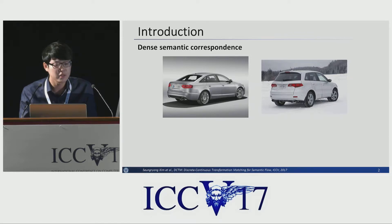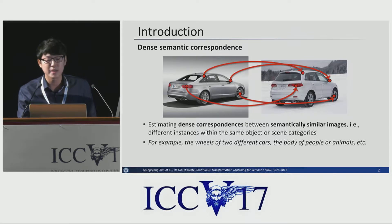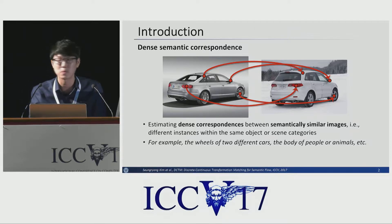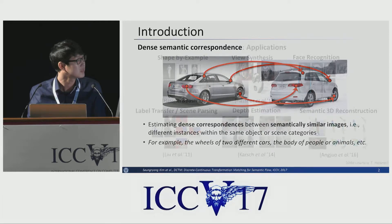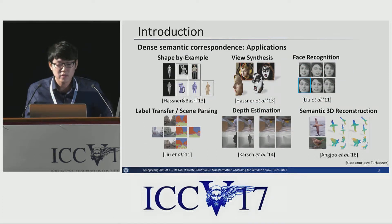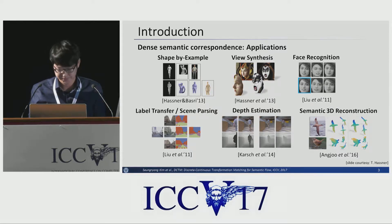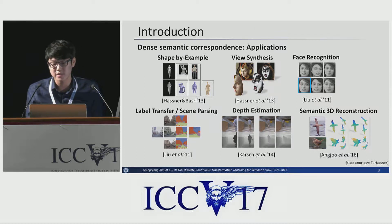The dense semantic correspondence problem is to estimate dense correspondences between semantically similar images, such as the wheels of two different cars or the body parts of people or animals. It is a very fundamental and important task for many computer vision applications, such as non-parametric scene parsing or semantic 3D reconstruction.